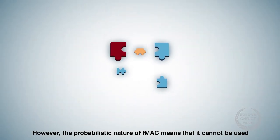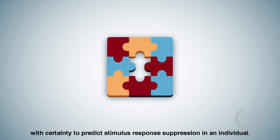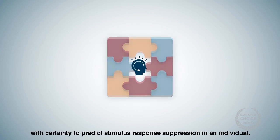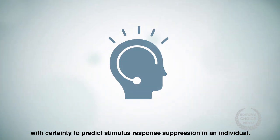However, the probabilistic nature of FMAC means that it cannot be used with certainty to predict stimulus response suppression in an individual.